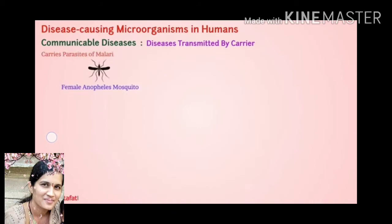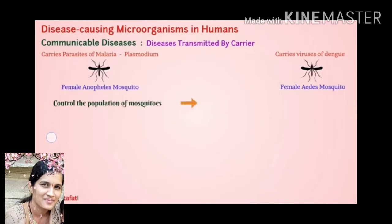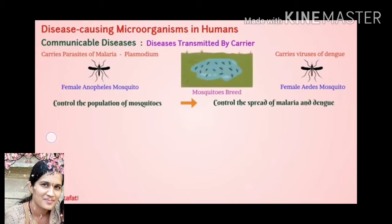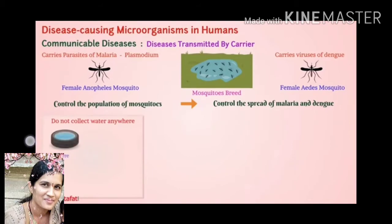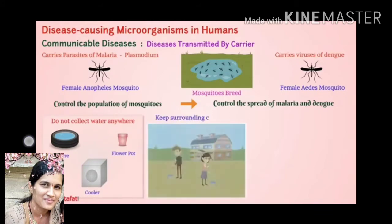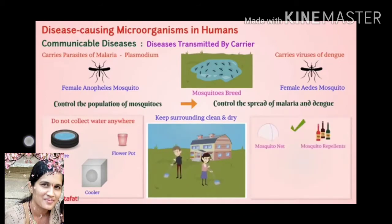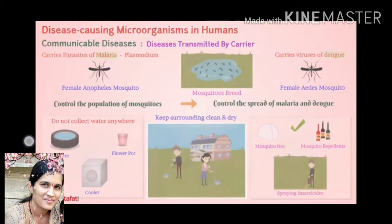The female Anopheles mosquito carries a parasite causing malaria, that is Plasmodium. The female Aedes mosquito carries the virus of dengue, which causes severe infection to human beings and can lead to death. Preventive measures: control the population of mosquitoes by not allowing water to collect anywhere — in tiles, coolers or flower pots. Keep surroundings clean and dry. Use mosquito nets, mosquito repellents, or spray insecticides to avoid the breeding of mosquitoes.